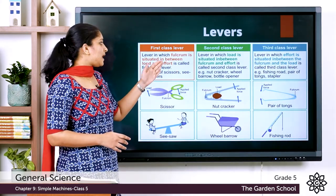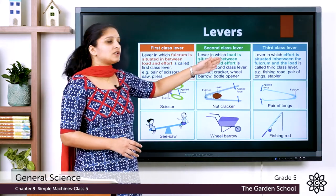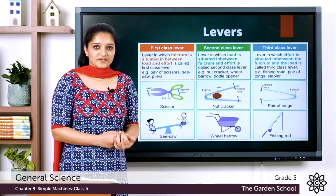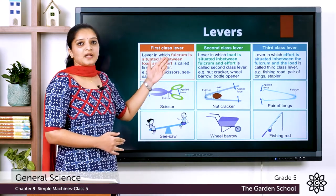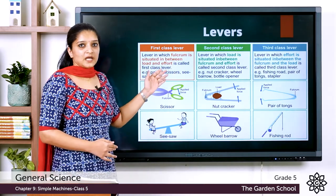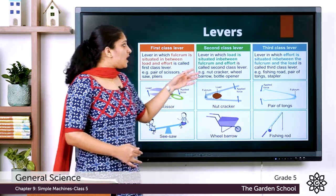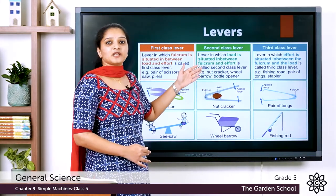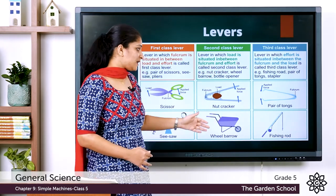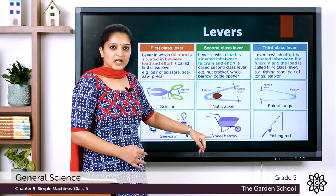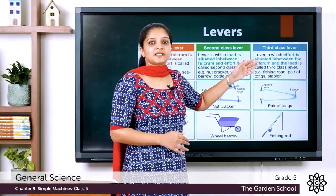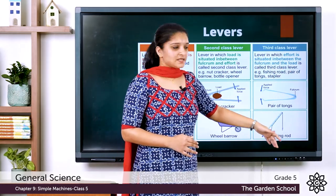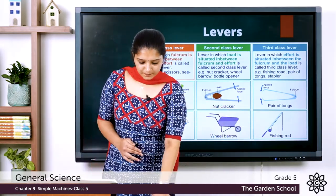In a first class lever, the fulcrum lies at the center. In the second class lever, the load lies at the center. In the third class lever, the effort lies at the center. A first class lever has fulcrum at the center of load and effort — examples: scissors and seesaw. A second class lever has load at the center — examples: nutcracker and wheelbarrow. A third class lever has effort at the center — examples: tongs and fishing rod.